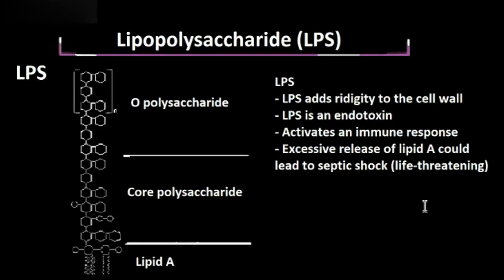LPS is also called an endotoxin, and we consider LPS to be an endotoxin because of the lipid A portion. The lipid A portion of LPS is toxic, so when a bacterial cell dies, it releases the lipid A portion. In small amounts, this is fine because your immune cells can recognize that lipid A is a foreign substance and mount the proper immune response.